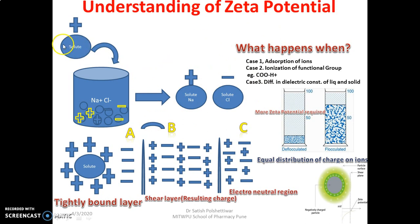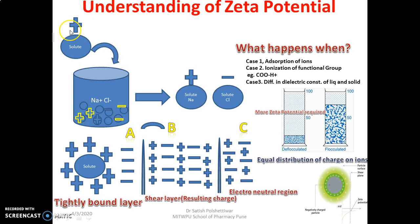There are three ways surface charge can arise. First, adsorption of ions — if the solute has a positive charge and you transfer it into a sodium chloride solution, the negative chloride ions adsorb onto the positive solute surface. Second is ionization of functional groups — if the solute has a -COOH group, it will be ionized. Third is difference in dielectric constant of liquid and solid, which is less important. The first two cases are the most important.